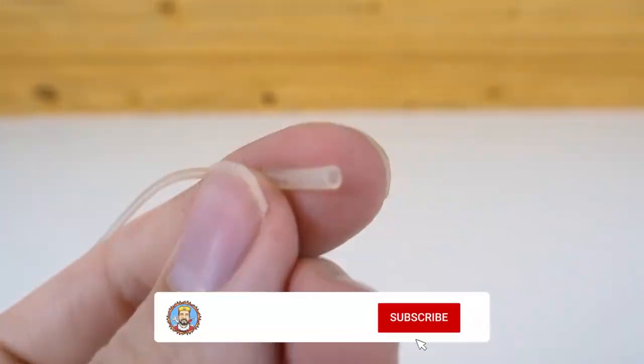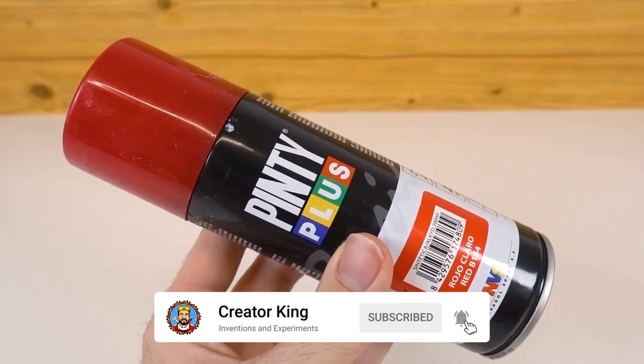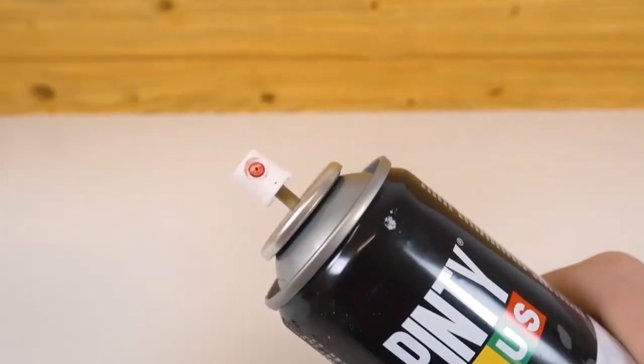This little hose will become part of something bigger. Take a can of spray paint from the nearest street artist and remove the nozzle from where the paint comes out.